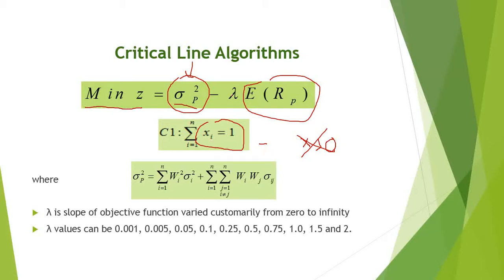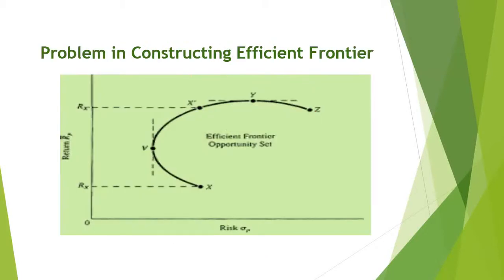Now we have developed a new function Z, which is equivalent to the portfolio risk minus lambda times the portfolio return. Lambda is the objective parameter that gives us the slope, and it takes values from zero to infinity. Typical values are taken from MATLAB for this purpose.